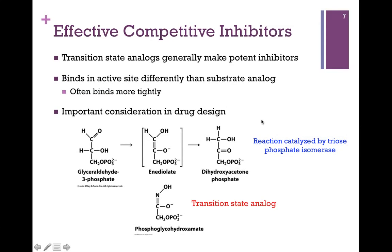In the simplest case, competitive inhibitors often resemble the substrate. But remember, enzymes bind tightly to the transition state — sometimes more tightly than to the substrate itself. So the more potent competitive inhibitor is often one that resembles the transition state. Here's the example of the reaction catalyzed by triosephosphate isomerase, which catalyzes the isomerization of glyceraldehyde-3-phosphate to dihydroxyacetone phosphate, with enediolate as the intermediate. An effective competitive inhibitor is phosphoglycohydroxamate — it looks very much like enediolate, except instead of a carbon-carbon double bond it has a carbon-nitrogen double bond. This transition state analog binds very tightly to the enzyme and is a very effective inhibitor.